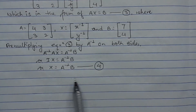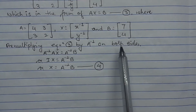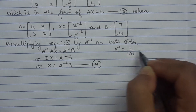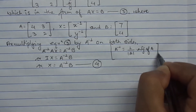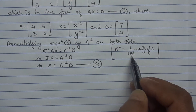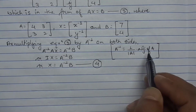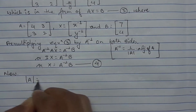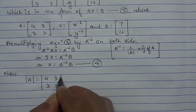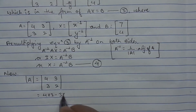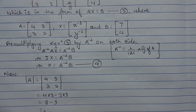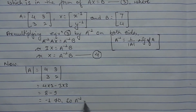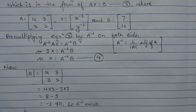It's clear that we can find the components of matrix X — that is, 1/X and 1/Y — using the expression A inverse B, where B is [7; 4]. The formula for the inverse of any matrix is: 1 upon the determinant of that matrix, times the adjoint of that matrix. First we find the determinant of A, whose elements are [4, 3; 3, 2]: 4 times 2 minus 3 times 3 equals 8 minus 9 equals minus 1.